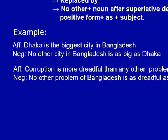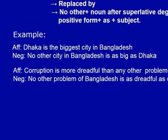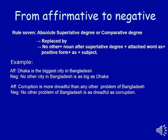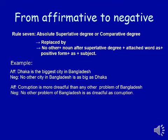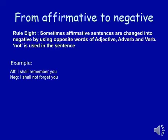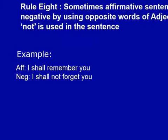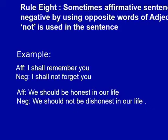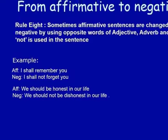Another example: 'Corruption is more dreadful than any other problem of Bangladesh.' Transform to: 'No other problem of Bangladesh is as dreadful as corruption.' Rule number eight: sometimes affirmative sentences are changed into negative by using opposite words of the verb, adjective, or other word. For example: 'I shall remember it' becomes 'I shall not forget it.' Another example: 'We should be honest in our life' becomes 'We should not be dishonest in our life,' using the opposite word of the adjective.